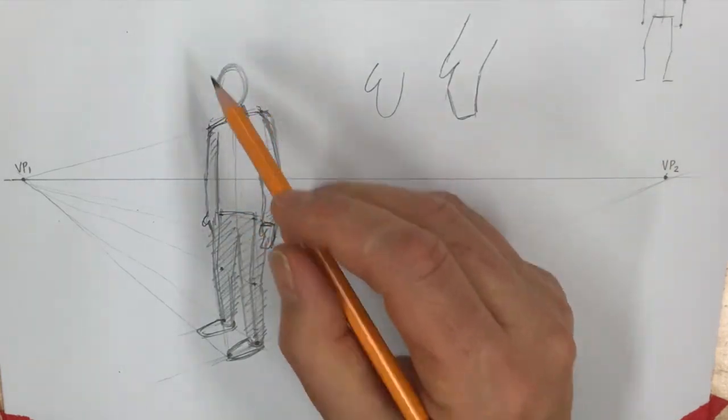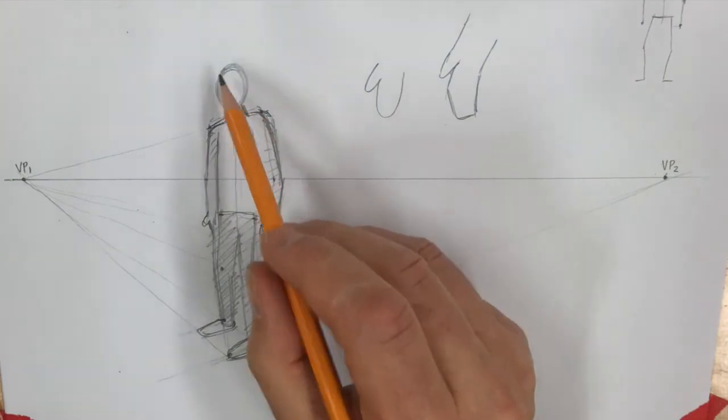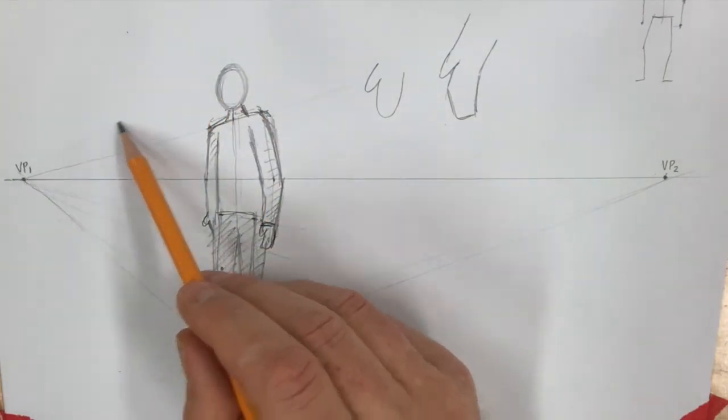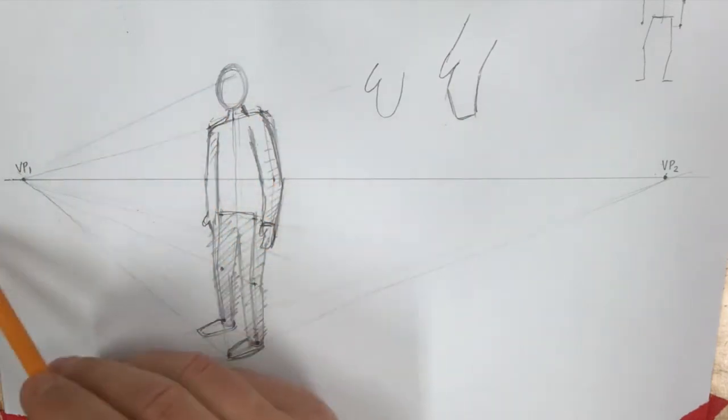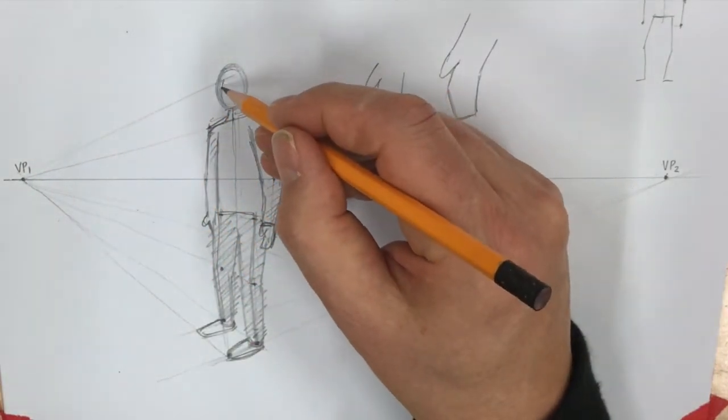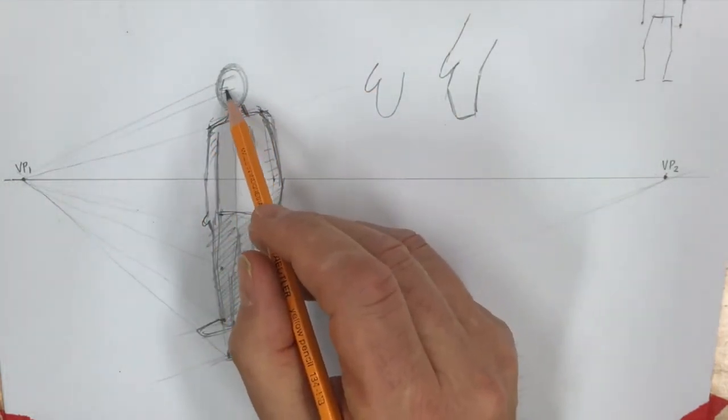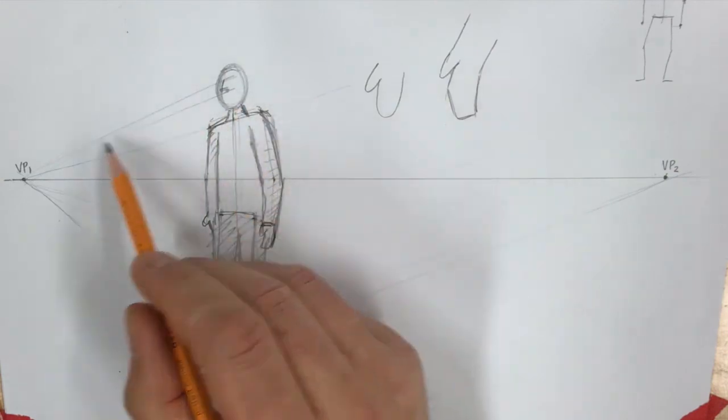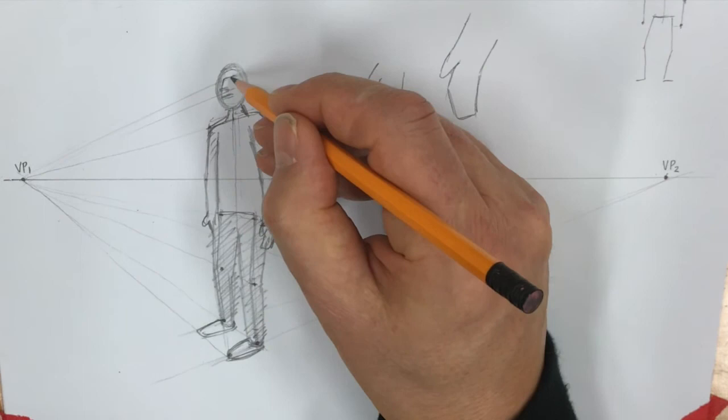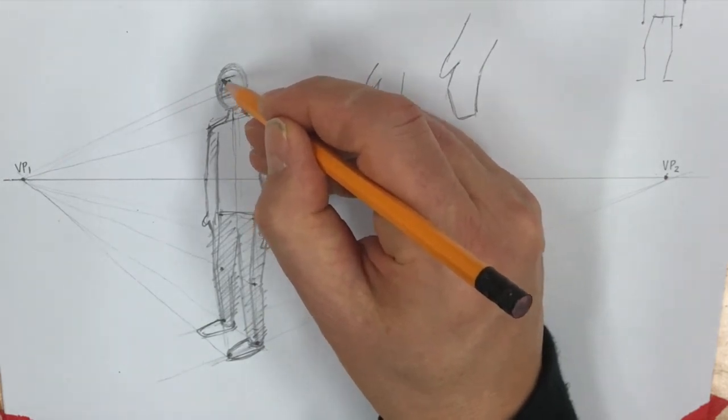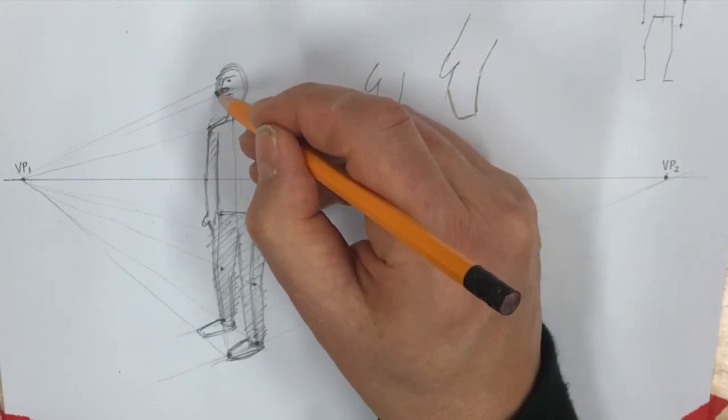But basically that should be okay. Now if you really want to, you can do some details on his face. Same thing is going to be true if you give him some eyebrows, for example, that's going to be a line basically going to the vanishing point. Nose, you're going to see because you're looking up towards his nose, you're going to see the bottom of his nose, and then you're going to see a mouth which also goes to the vanishing point roughly. So obviously this is still only very rough, and it's not that important.